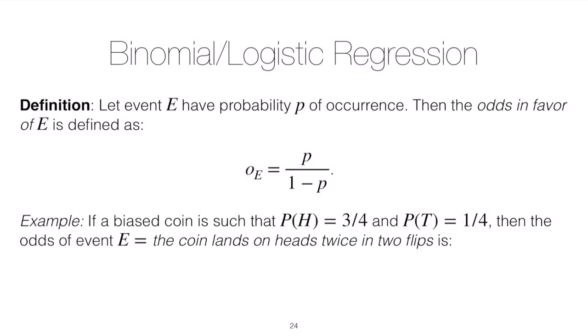As a simple example, suppose we have a biased coin such that the probability of heads is 3/4, which means the probability of tails is 1/4. Could we calculate the odds of the event E: the coin lands on heads twice in two flips?